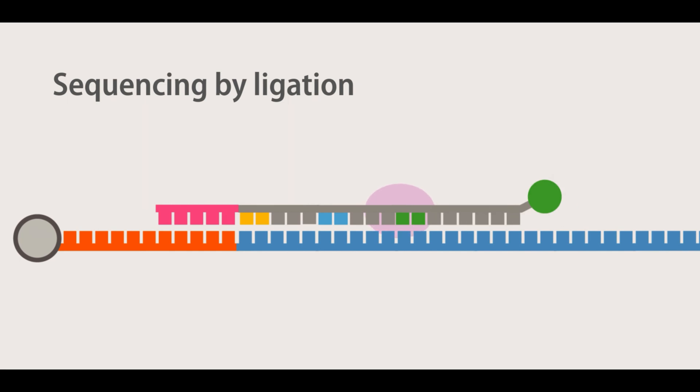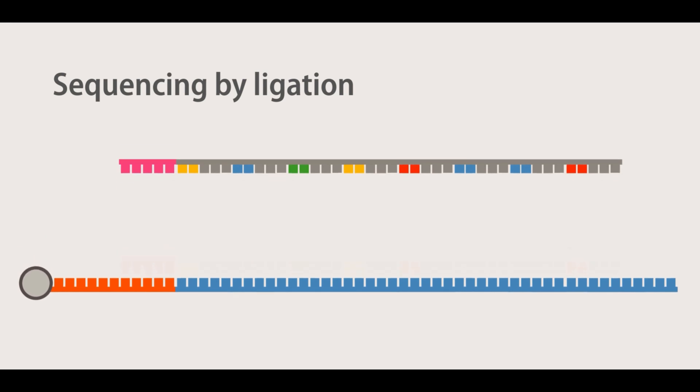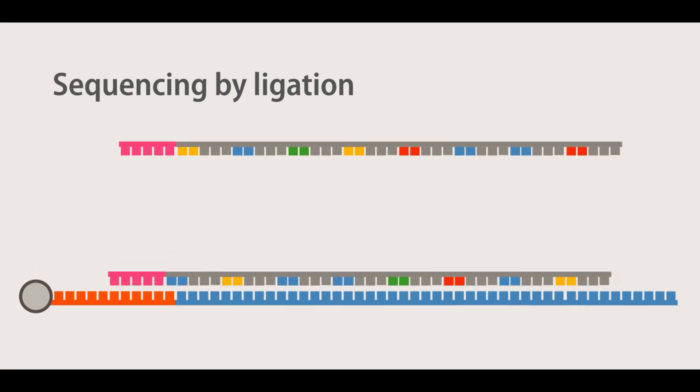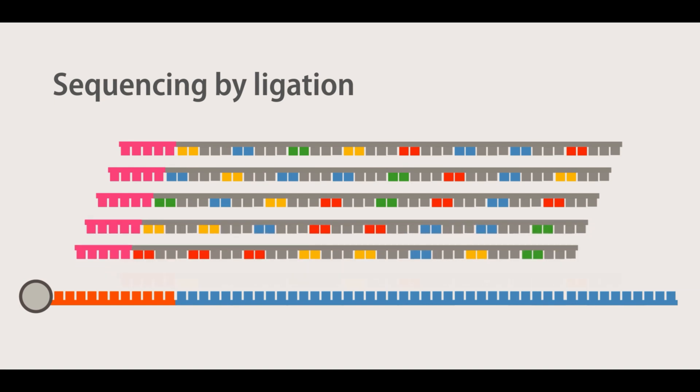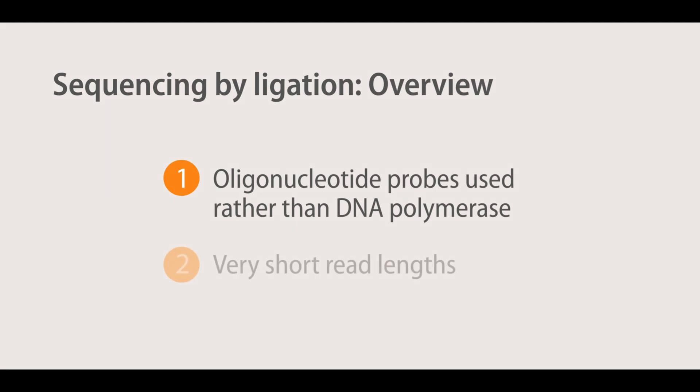After approximately seven cycles of ligation, the DNA strand is denatured, and another sequencing primer, offset by one base from the previous primer, is used to repeat these steps. In total five sequencing primers are used. The major disadvantage of this technology is the very short sequencing reads generated.